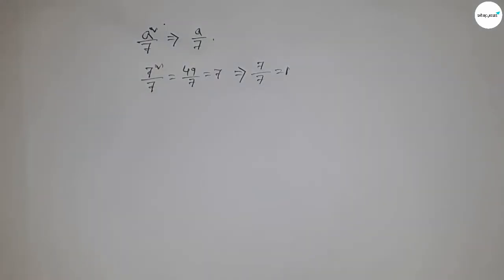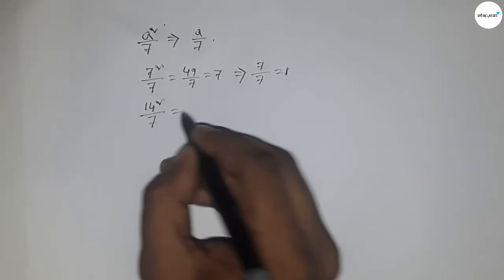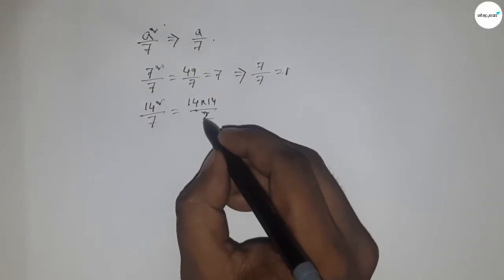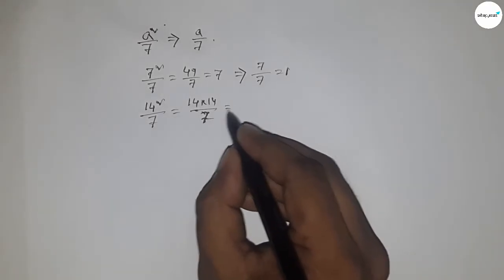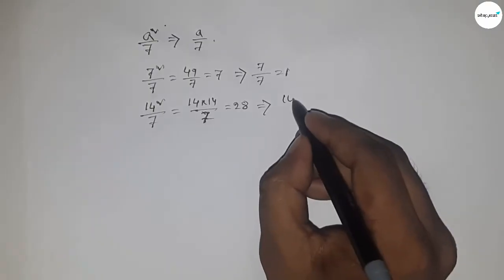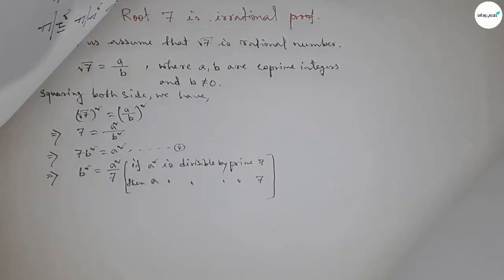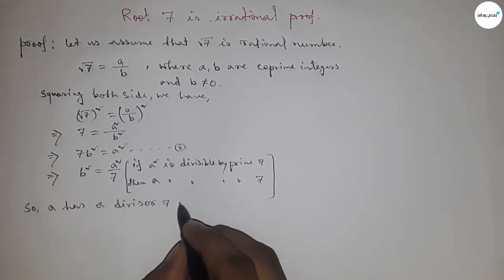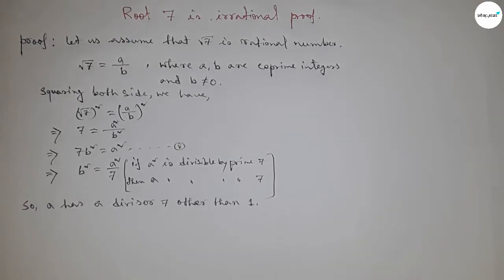Let us take another example: a = 14. Then 14 squared divided by 7 equals 14 × 14 / 7 = 28, which implies that 14 is also divisible by 7. From this we can conclude that a has a divisor 7 other than 1.